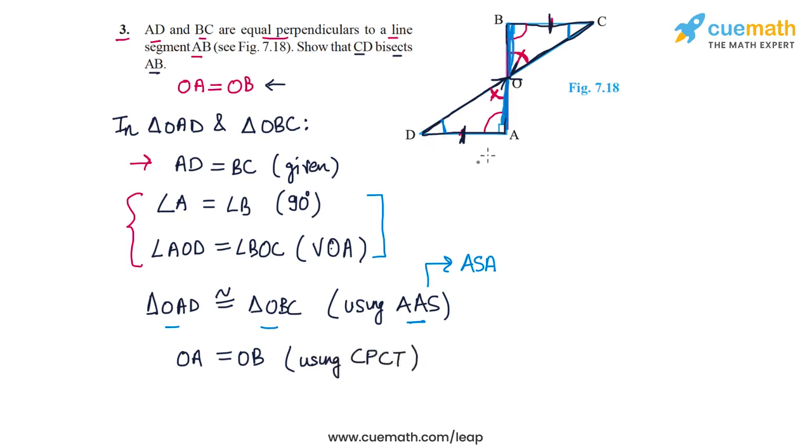This means that CD bisects AB at O, and that proves the statement we wanted to prove.